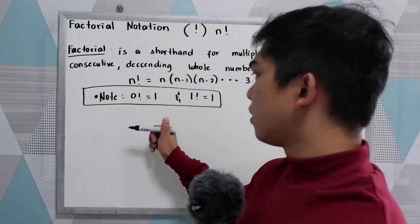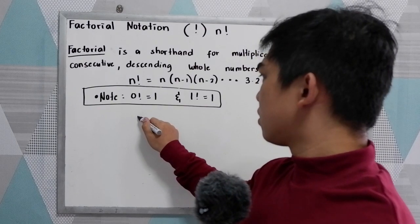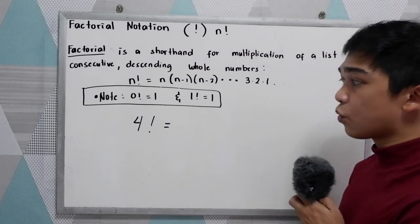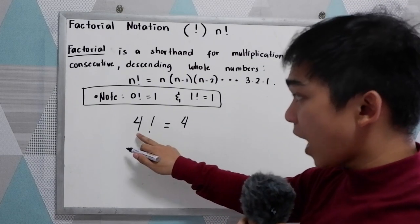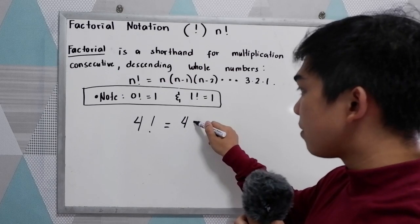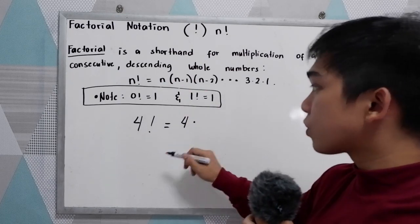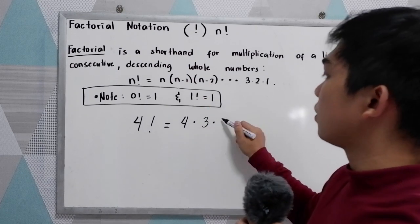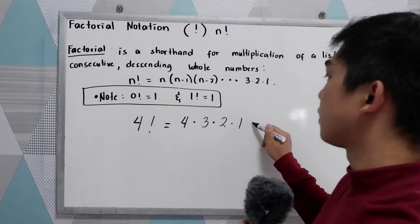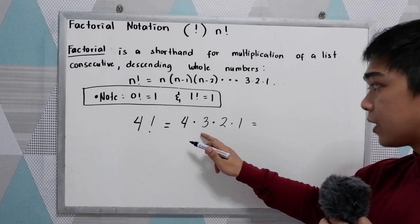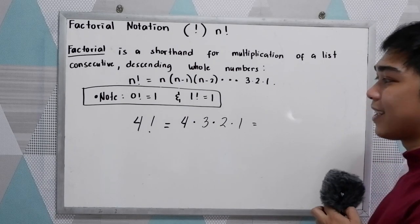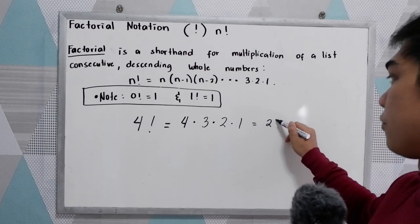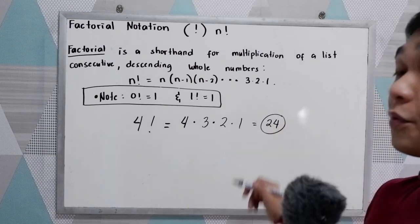Let's say the question asks you to evaluate 4 factorial. That is equal to 4, which is our n, times n minus 1 — so 4 minus 1 — times 4 minus 2, times 1. That gives us 4 times 3 times 2 times 1, which is 12 times 2, that is 24 times 1, which is 24. So 4 factorial is equal to 24.